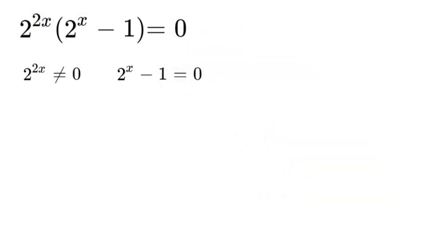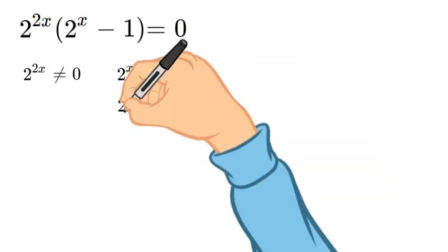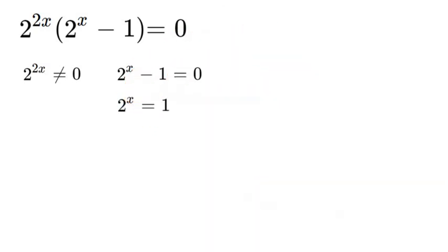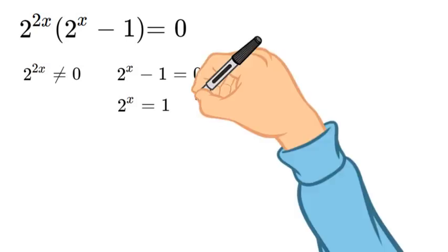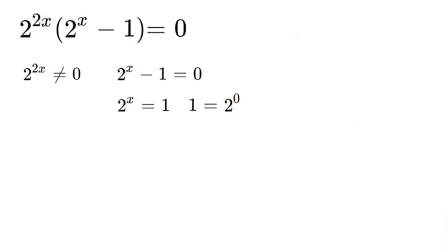So we can go ahead and add 1 so that our equation equals 2 to the power of x equals 1. And then we know that anything to the power of 0 is equal to 1.